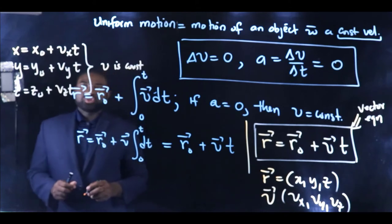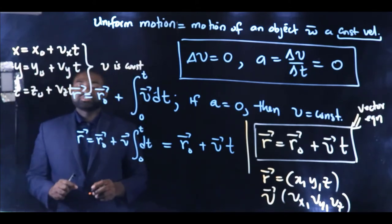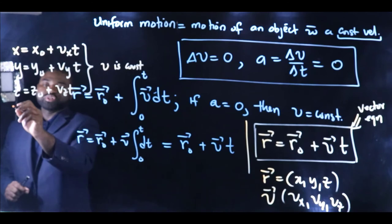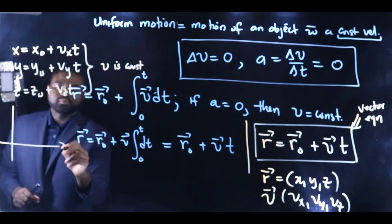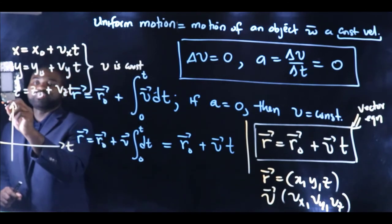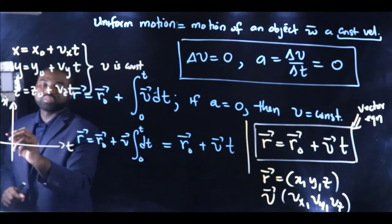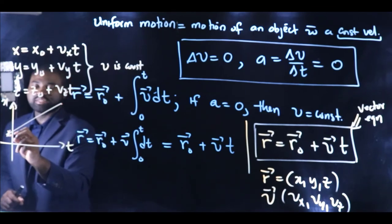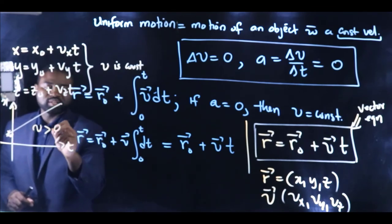So if we draw the graph, for example, let me pick the x direction. If we draw the graph of x against t, it's going to look like this. This is x₀. In this case, vₓ is greater than zero.